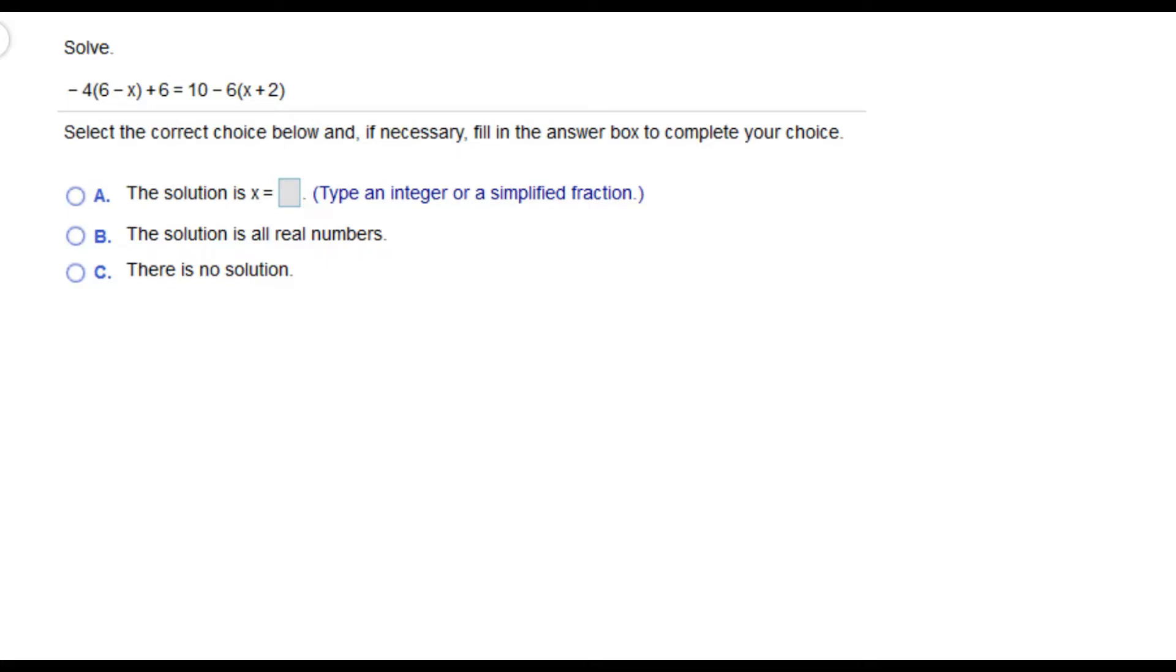Hi, this is Professor Sartor and I'm going to be working 10 problems from my college algebra course. The first question says solve, and the type of equation we have is a linear equation: negative 4 times the quantity 6 minus x plus 6 equals 10 minus 6 times the quantity x plus 2.